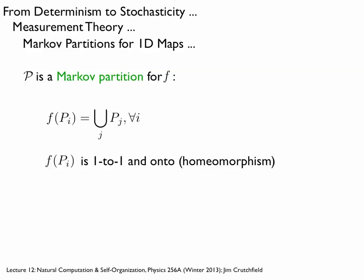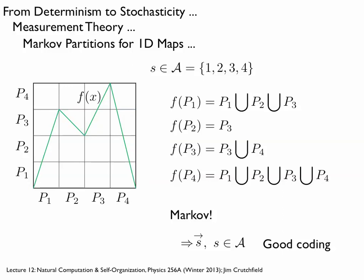Here's an example to drive this home. Here's the domain of F, the range of F, and F in green. I made a simple example with four partition elements — they don't overlap and their union is the full interval. The first criterion: I apply F to the first cell, and that maps to exactly P₁, P₂, and P₃. P₂ maps to P₃, P₃ maps to P₃ and P₄, and P₄ maps to all of them. So F of P₁ is the union of P₁ and P₃, and so on. And F is one-to-one monotonic within each cell.